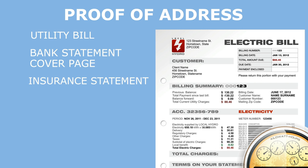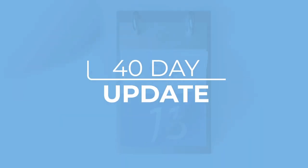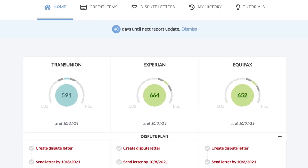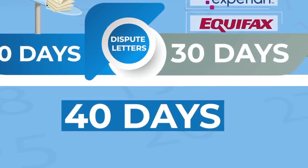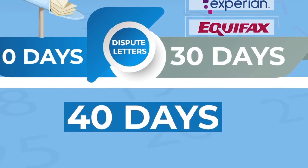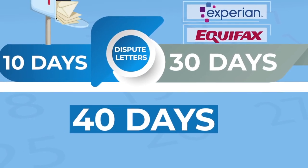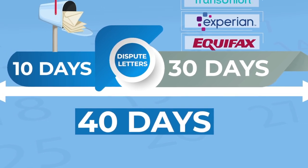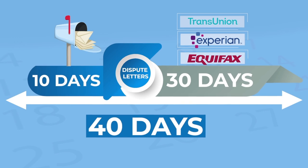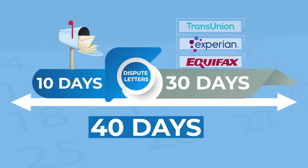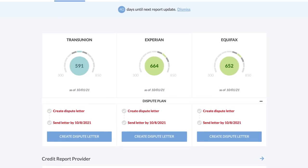The DIY software will automatically attach your ID documents to every dispute letter you create. Even though you might get real-time updates from your credit report provider or other monitoring services, your DIY software automatically updates once every 40 days. Because it's a dispute platform, it's programmed to give the bureaus and your creditors all the time they're allowed by law to respond to your disputes. Follow the 40-day timeline for the best results.